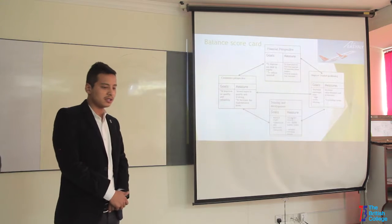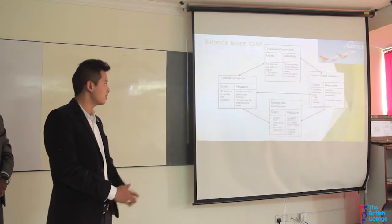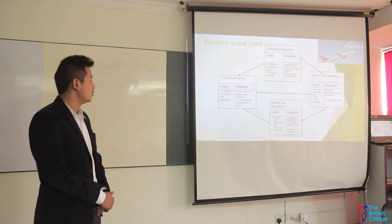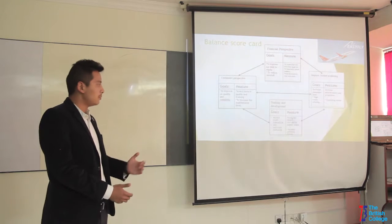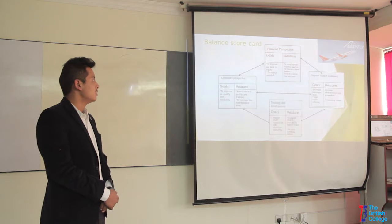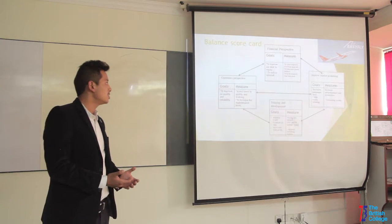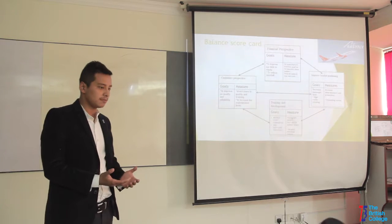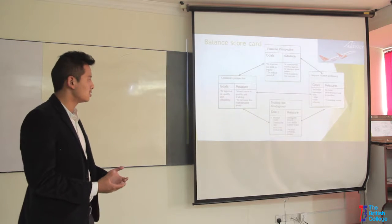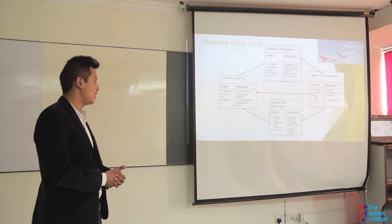Next is the Balanced Scorecard, a strategic framework which takes into account non-financial perspectives such as the customer perspective and financial perspective. We have four aspects. First, the customer perspective goal is to improve quality and reliability — we focused more on quality and training, and on the maintenance level of the airline. Second, the financial perspective goal is to improve our debt-to-equity ratio and reduce the overdraft — we issued shares in the first quarter and aimed to have fewer shareholders. Third, training and development — our goal was to motivate staff and reduce staff turnover, so we gave 20% of profit to employees and paid above the market wage.